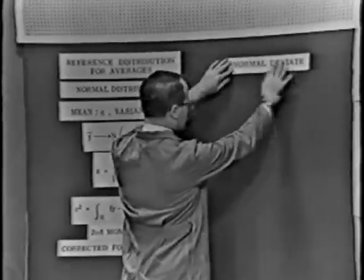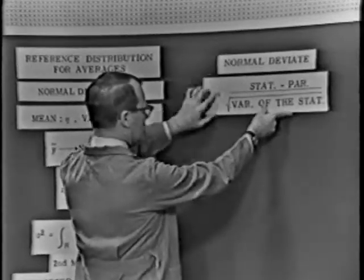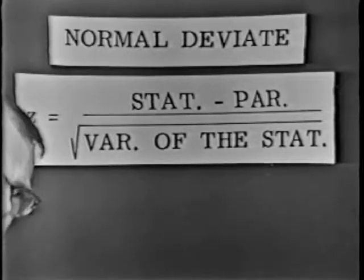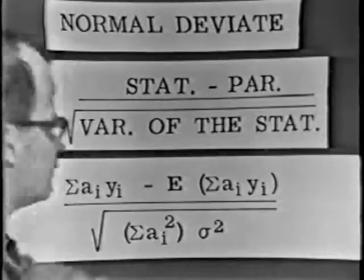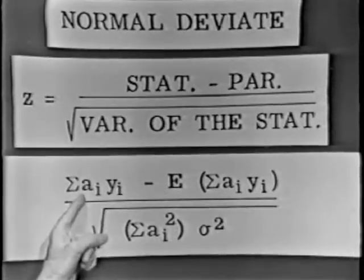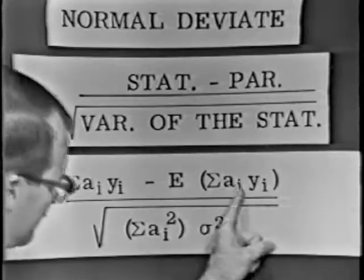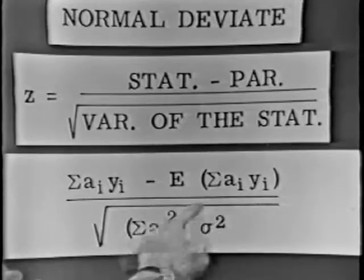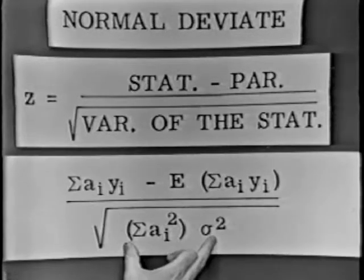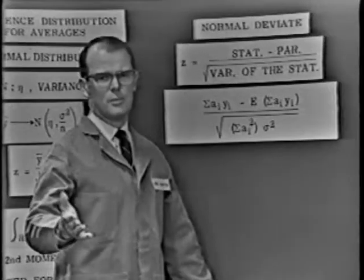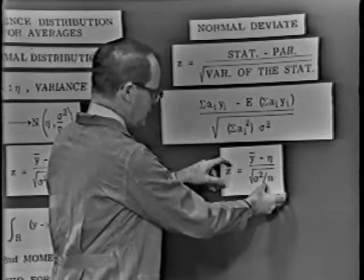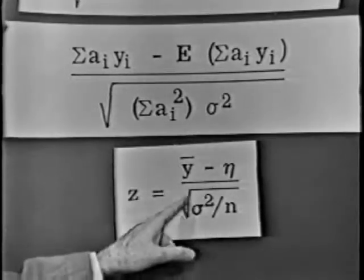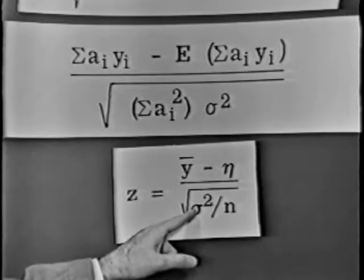Here's the normal deviate written down in words. The normal deviate Z is always equal to a statistic minus the parameter the statistic estimates, divided by the square root of the variance of the statistic. This statistic has to be a linear combination of the observations. Algebraically: the statistic is a linear combination of the observations minus — this is called the expected value of the statistic, which is the parameter the statistic is estimating — divided by the square root of the variance of the statistic, which is some constant times sigma squared. You're already acquainted with one linear statistic: the average. When plugged into the normal deviate equation, Z equals y-bar minus eta divided by the square root of sigma squared over n.